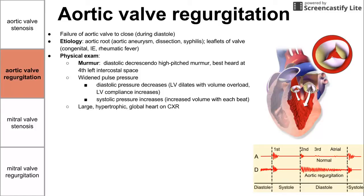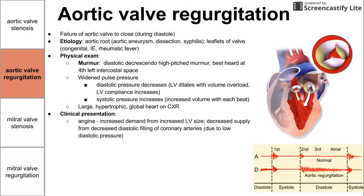Physical exam shows a large global heart on chest X-ray. Patient symptoms include angina — there's more demand as the left ventricle gets bigger and may become hypertrophic. You might also have heart failure as the left ventricle dilates from volume overload. Left ventricular dilation and subsequent remodeling can cause systolic dysfunction, backing up into the left atria and into the pulmonary circulation.